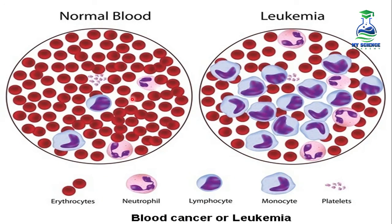In this diagram, if we observe normal blood and leukemia blood, we can clearly see a difference. In leukemia blood, the white blood cells are present in very high numbers, and they are not normal white blood cells — they are immature and abnormal white blood cells.